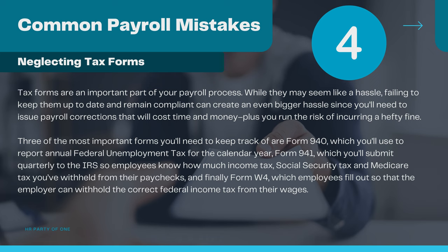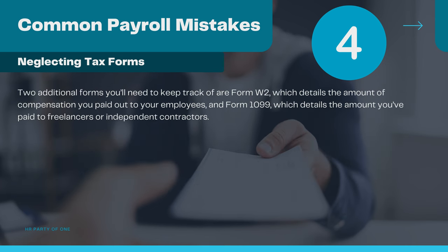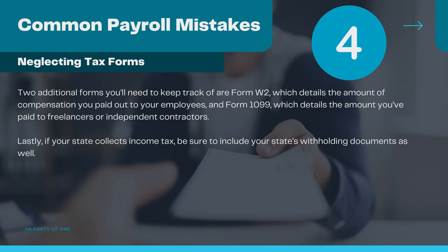And finally, Form W-4, which employees fill out so the employer can withhold the correct federal income taxes from their wages. Two additional forms you'll need to keep track of are Form W-2, which details the amount of compensation you've paid out to your employees, and Form 1099, which details the amount you've paid to freelancers or independent contractors. Lastly, if your state collects income tax, be sure to include your state's withholding documents as well.